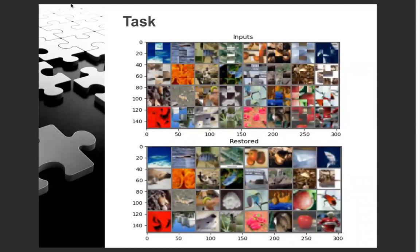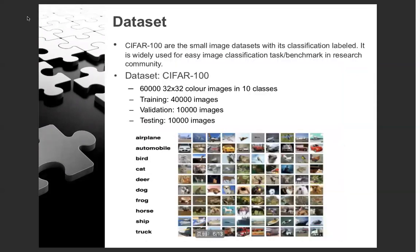The picture on the top are examples of our input, there are shuffled jigsaw puzzles, and the picture on the bottom are the original picture. The dataset that we use for this project is called CIFAR, which contains 60,000 32x32 color images in total. We divide the datasets as follows: 40,000 for training, 10,000 for validation, and 10,000 for testing.